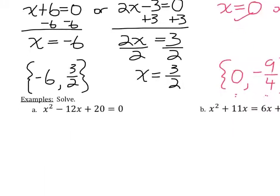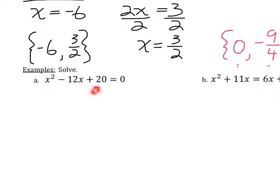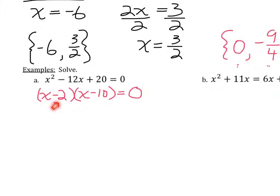Now we'll look at examples where we have to factor first. I have x squared minus 12x plus 20 equals zero. I can't solve this directly because of the x squared, so my only option is to reduce that exponent by factoring, which will give me linear equations. There's a 1 in front of the x squared and no GCF, so it factors into two binomials. I want two numbers that multiply to give me 20 but add up to negative 12 — negative 2 and negative 10 work. So I get x minus 2 times x minus 10 equals zero, which is a perfect setup for the zero factor property. I set each factor equal to zero.